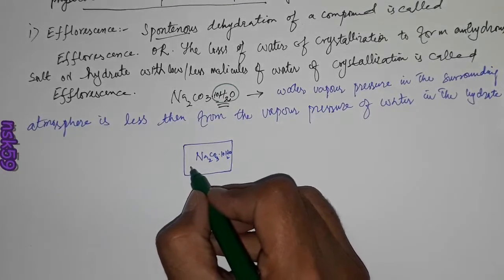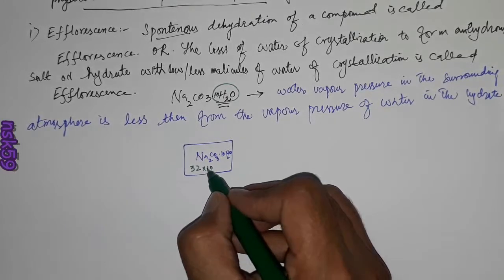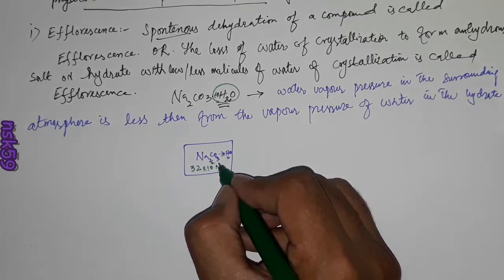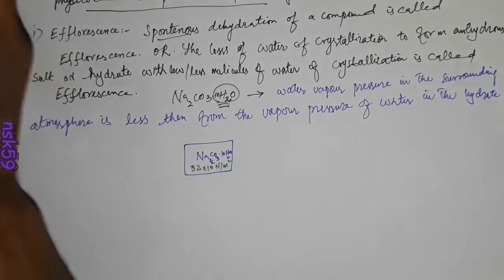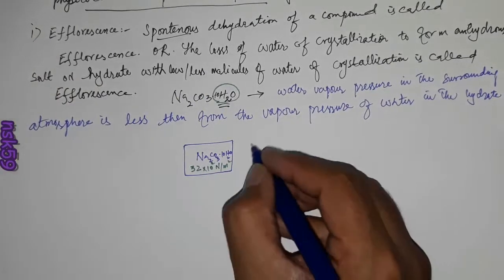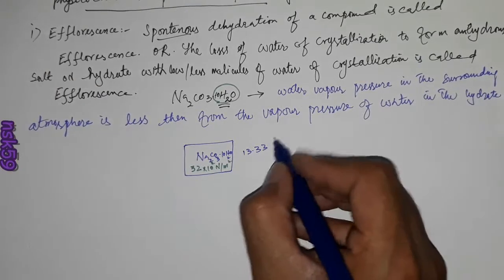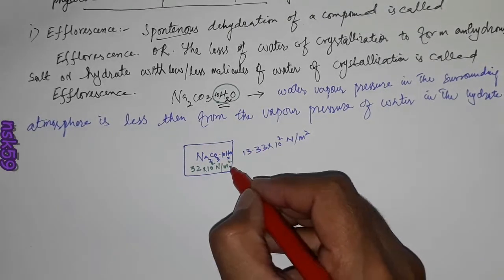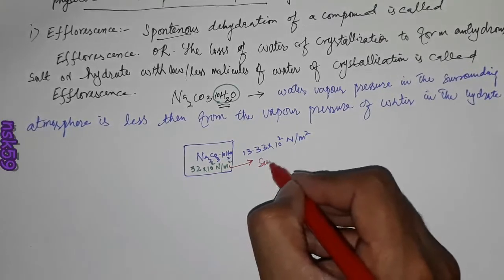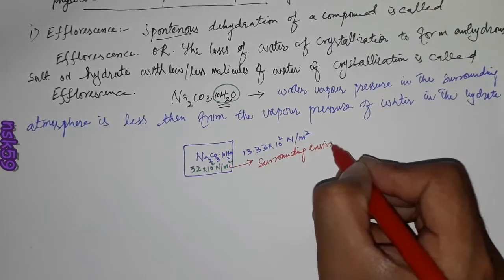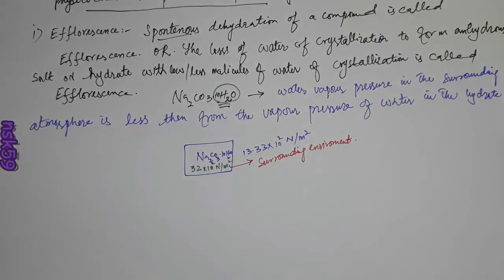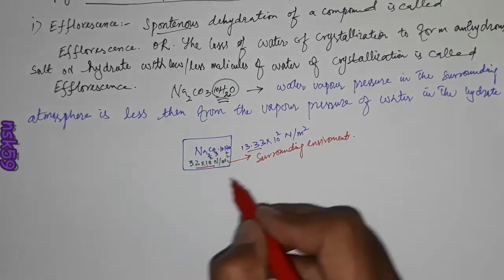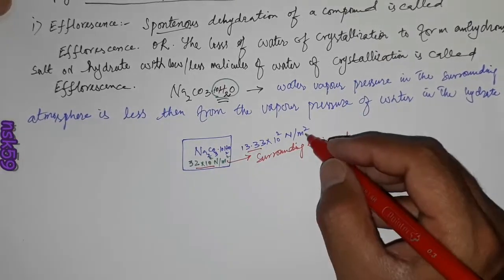For example, if the water vapor pressure inside the salt is 32 × 10² Newton per meter and the vapor pressure of the surrounding atmosphere is 13.33 × 10² Newton per meter, then water will be lost and will move into the surrounding environment. A lower hydrate or anhydrous salt will be obtained. This process will stop when both vapor pressure values become equal to each other.